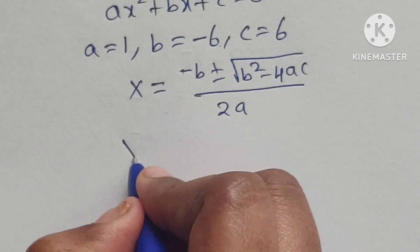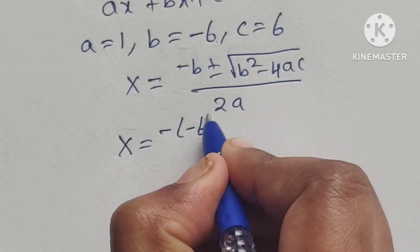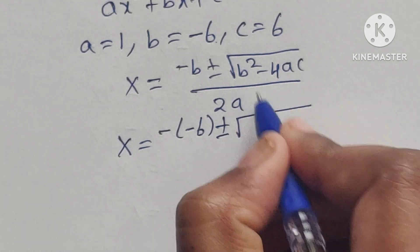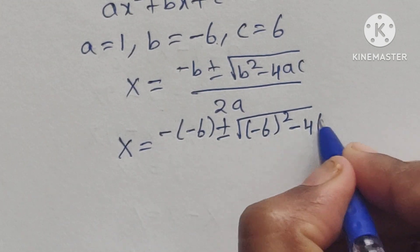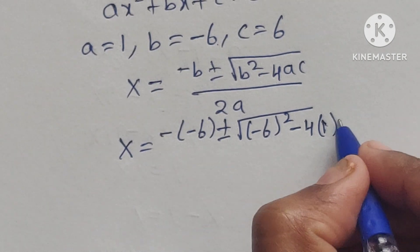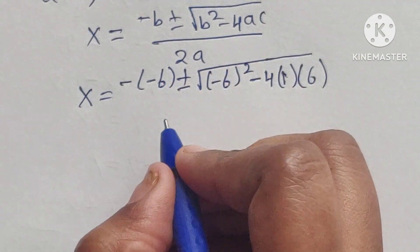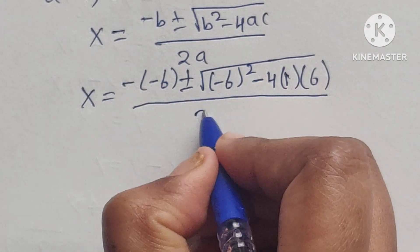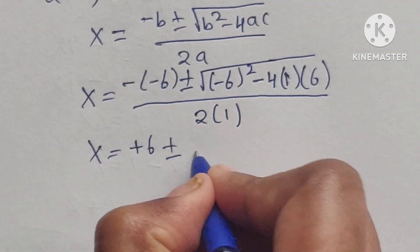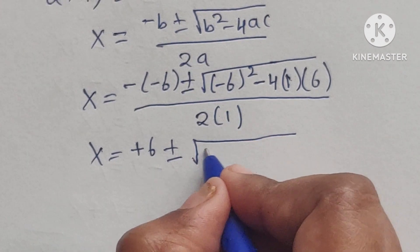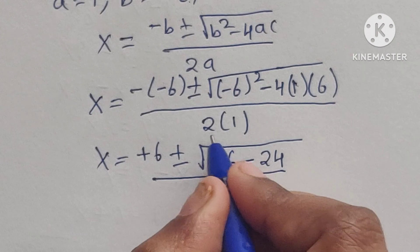Substituting: x equals minus of (minus 6), plus or minus square root of (6 squared minus 4 times 1 times 6), divided by 2 times 1. This gives x equals 6 plus or minus square root of (36 minus 24), divided by 2.